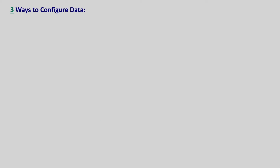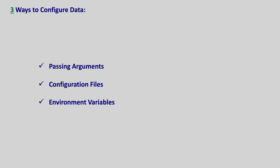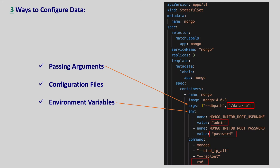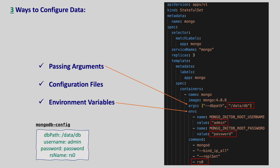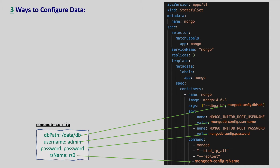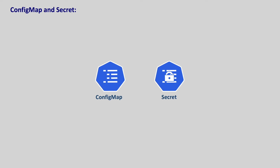There are three different ways we can give the configuration data to any application: passing as arguments, configuration files, and using environment variables. We tried a couple of them already. But hardcoding this data even in the pod definition is not a good idea, as we need different pod definitions for each environment. To reuse the same pod definition in different environments, it makes sense to define the configuration data in a common place and refer to the data from the pod descriptor.